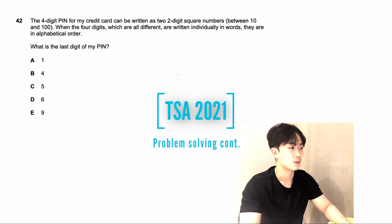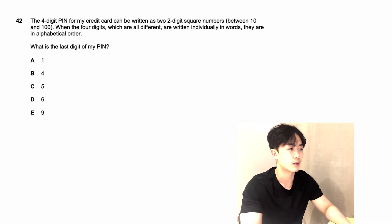Moving on to question number 42. The four-digit PIN for my credit card can be written as two two-digit square numbers between 10 and 100. When the four digits, which are all different, are written individually in words, they are in alphabetical order. What is the last digit of my PIN?